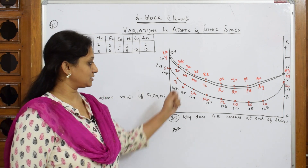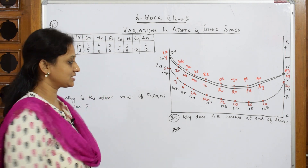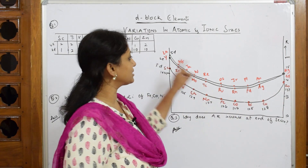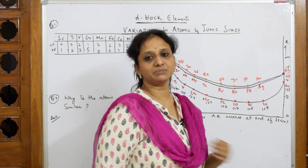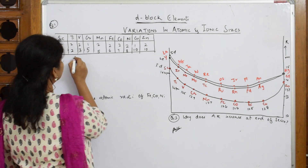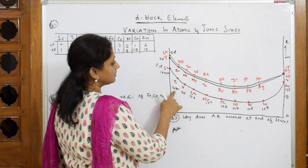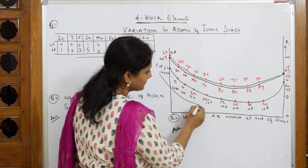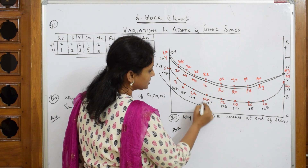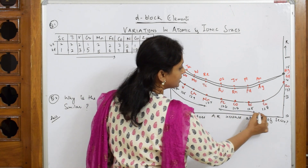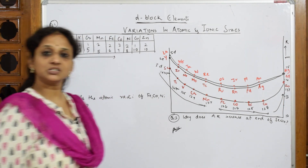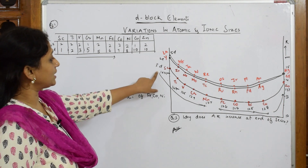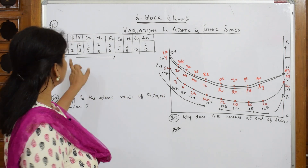Going through this graph of atomic radii, the 3D series starts from scandium and ends at zinc. 4D starts from yttrium to cadmium, and 5D starts at lanthanum and ends at mercury. As we move from left to right in a period, the size is decreasing: 164 picometers, 147, 135, 129, 137. We will study this under three cases, including this anomaly.